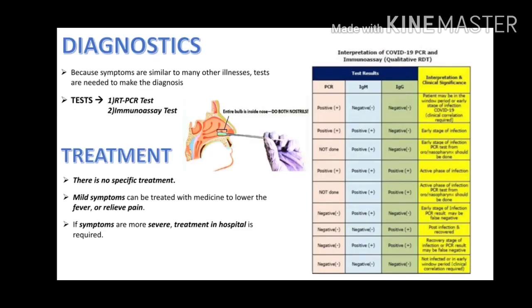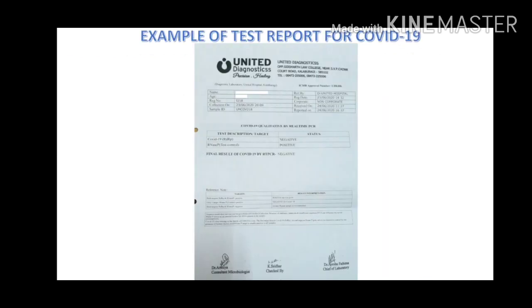Diagnosis: In India, tests available for COVID-19 are RT-PCR tests and immunoassay. Coming to treatment — till now there is no treatment for the disease. Only the symptoms are being relieved and immunity boosters are being given. There is a chart showing the interpretation of COVID-19 PCR and immunoassay tests, and a sample laboratory report of COVID-19 showing a negative result is also shown.